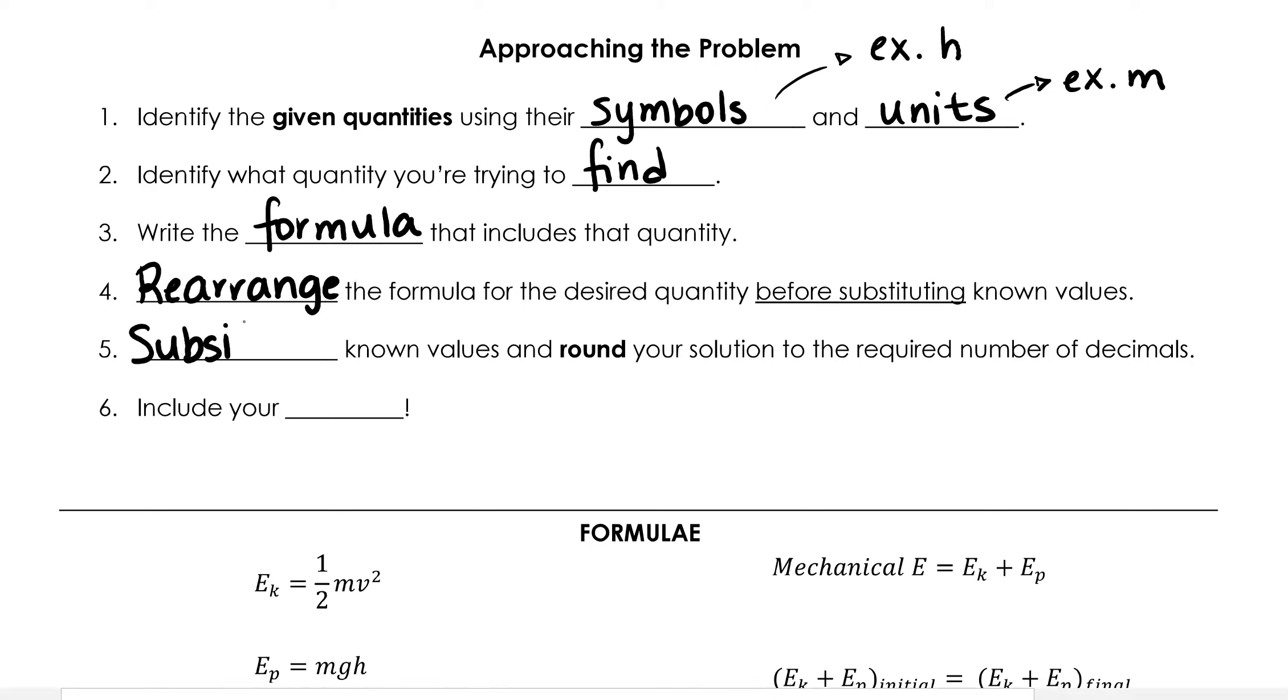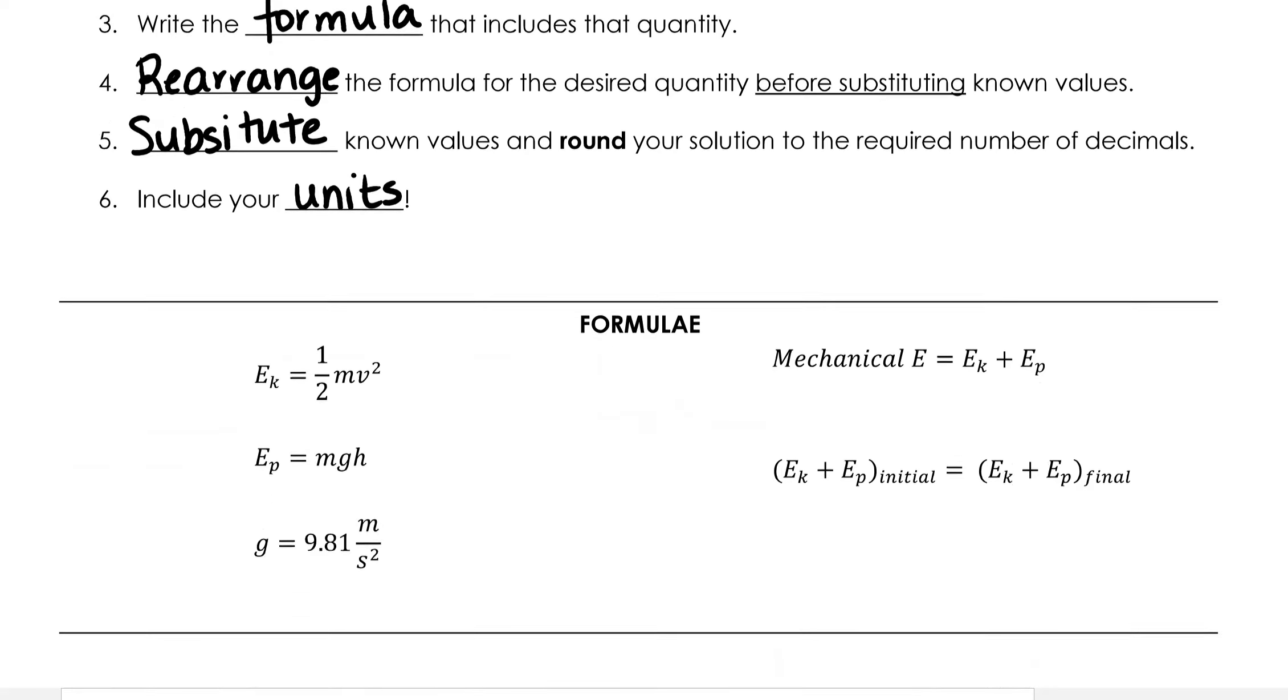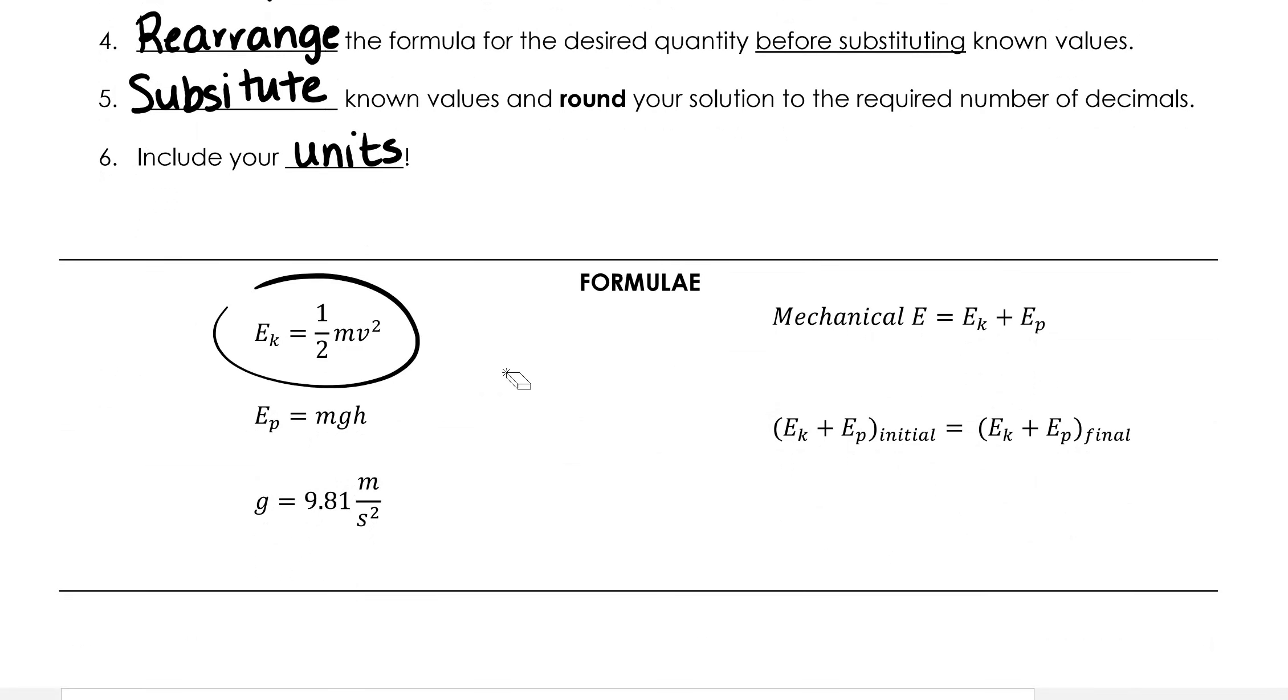Finally, we substitute known values and round our solution to the required number of decimals. In Physics 10, the question will tell you how accurate your answer needs to be. In senior physics, you're going to learn about something called significant figures that will show you how detailed your answer needs to be. In your answer, please include your units. Below, here's all the formulae we've learned so far: kinetic energy, gravitational potential energy, mechanical energy, and the conservation of energy formula. Also, gravitational acceleration is 9.81 meters per second squared, but this is only true for Earth, so if you're dealing with a question that involves the Moon or Mars, g is not 9.81.